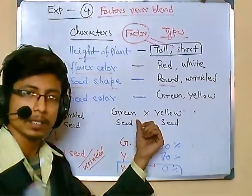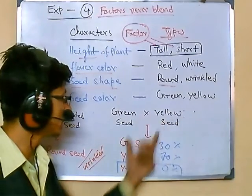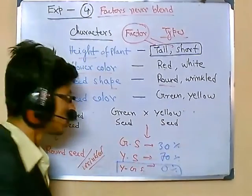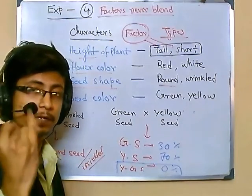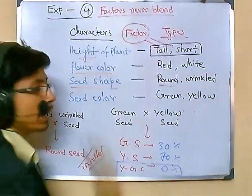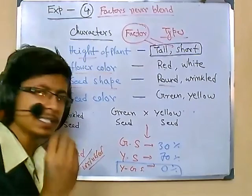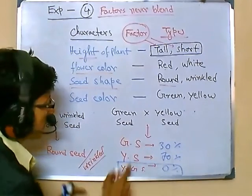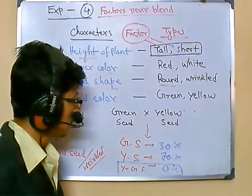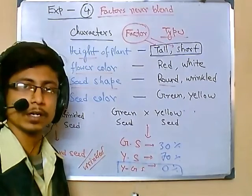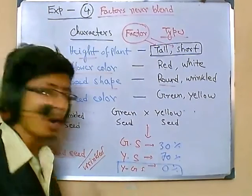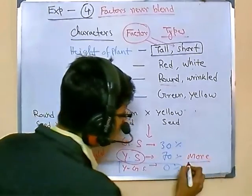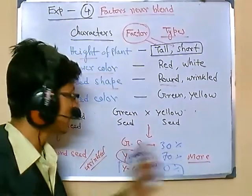For example, if we take a green seed plant and a yellow seed plant and cross them, we get green seed and yellow seed offspring. Mendel conducted this experiment many times to find out whether there is any blending. He found no blend. But from the same experiment, he noticed something interesting: among all the variants in the next generation, yellow seed plants were always more numerous than green seed plants.